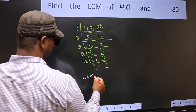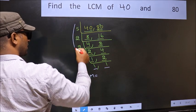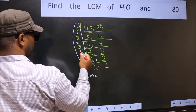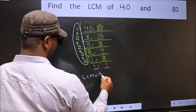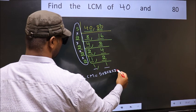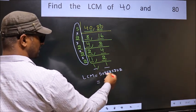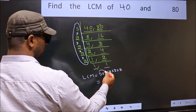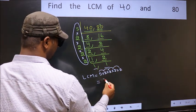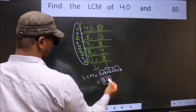So our LCM is the product of these numbers. That is 5 times 2 times 2 times 2 times 2 times 2 times 2. Let us multiply: 5 times 2 is 10, times 2 is 20, times 2 is 40, times 2 is 80. So 80 is our LCM.